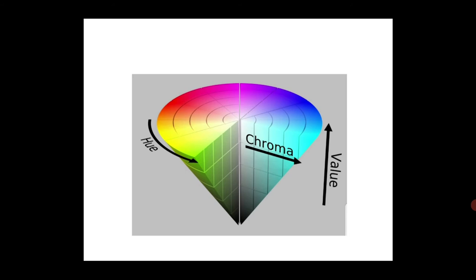So as darkness increases, value decreases; and as the intensity of color increases, chroma increases. That is how value and chroma are related. If you increase the shade of a color, chroma will increase and value will decrease — they are inversely related to each other. This is also asked as one of the options in exams.